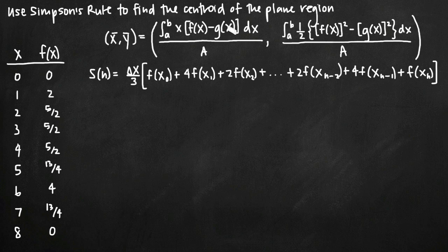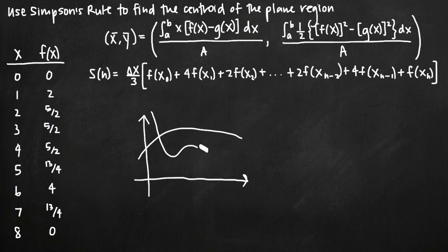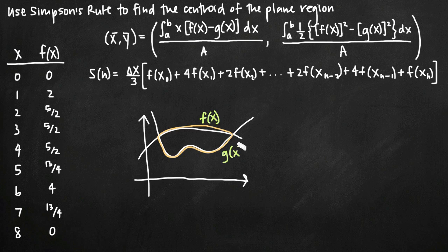Sometimes you need to find the centroid of a plane region defined by two curves — say one curve on top and another below — and the plane region is the area bounded by those two curves. In that case, you have two functions: the upper function f and the lower function g. You plug both f and g into the centroid formula and take the integrals accordingly.